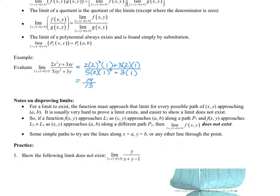We actually talk about disproving limits more than we talk about proving limits. How can you follow infinitely many pathways to a point? From the left or from the right was fine in calc 1. But from the left, from the right, from the front, from the back, from a 45-degree angle, a 225-degree angle — it's not going to play out right. So we can't do that. What we do is look for a counterexample. If you cannot show that a limit does not exist, then there's reason to believe that the limit does exist.